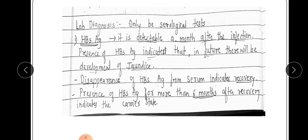For laboratory diagnosis of HBV, only serological (blood) tests are used. The three antigens — HBsAg, HBeAg, and HBcAg — are tested. HBsAg is detectable in the blood after one month of infection; its presence indicates that the person will develop jaundice in the future. When HBsAg disappears from the blood, it indicates recovery.